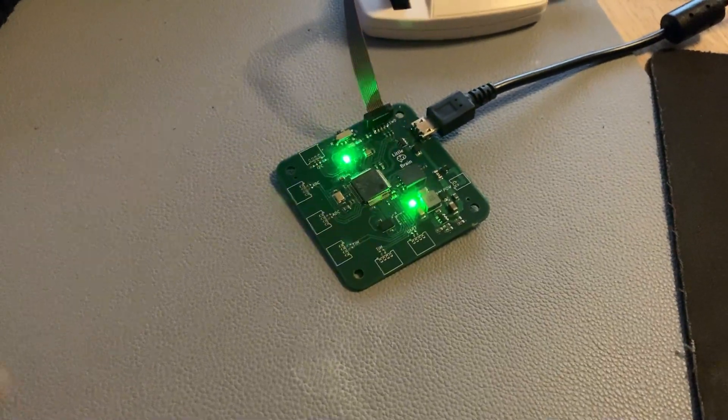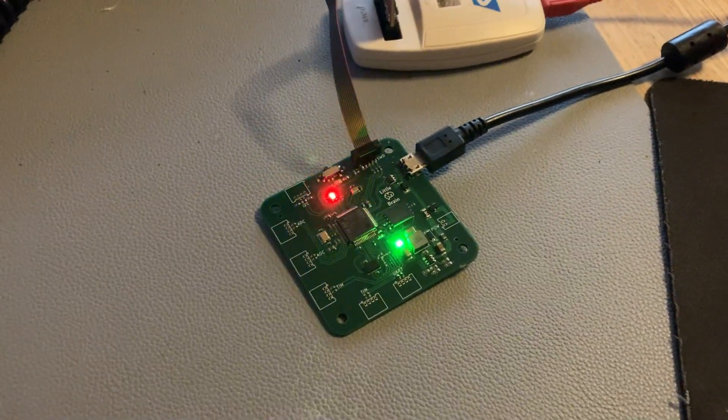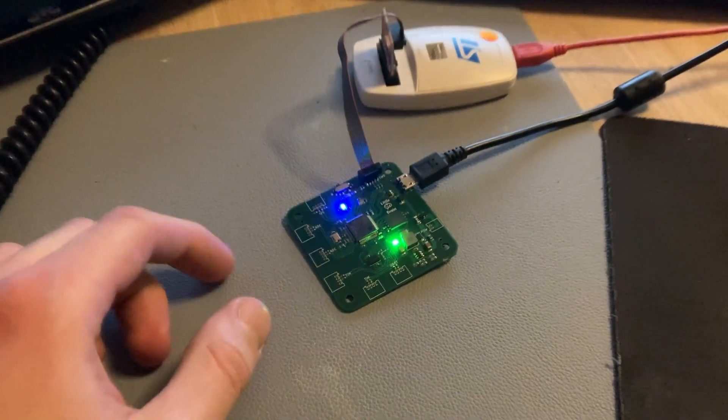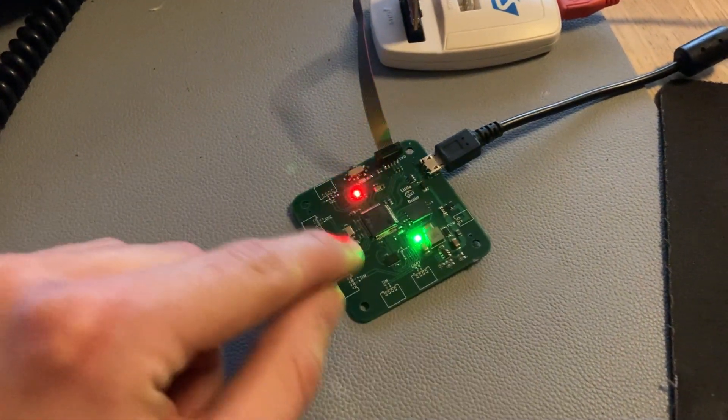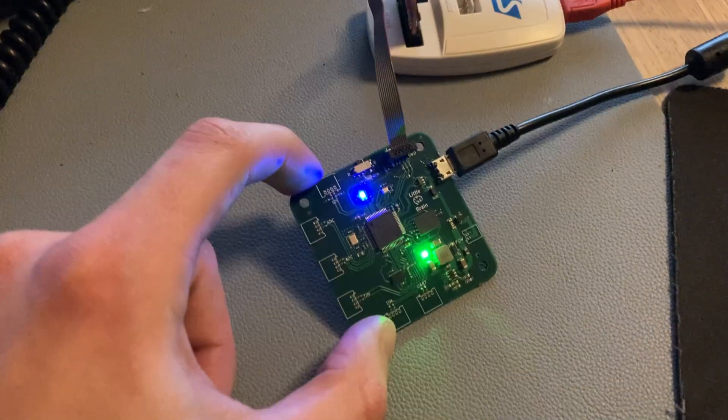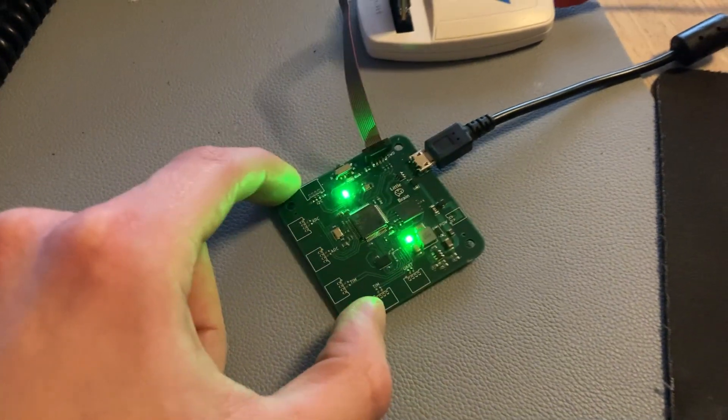In this video I'd like to show you how to implement digital filters which are based on analog prototypes, for example a simple RC low-pass filter. I've currently got this implementation running on this STM32 microcontroller on this little brain board which I had made by JLCPCB.